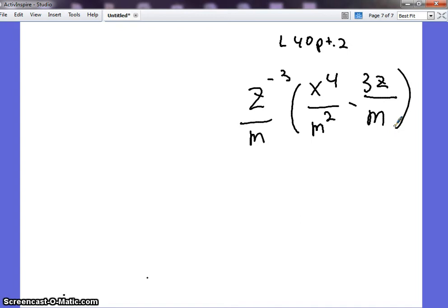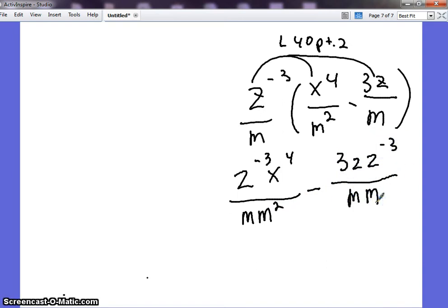So we're going to solve this one by using the distributive property. When I use the distributive property, the very first thing I do is take each term and put it to each part. So when I do that, I get z to the negative third x to the fourth over m times m squared minus 3z, and then z to the negative third over m times m. Notice, all I did was smash everything together. I didn't even try to combine anything.